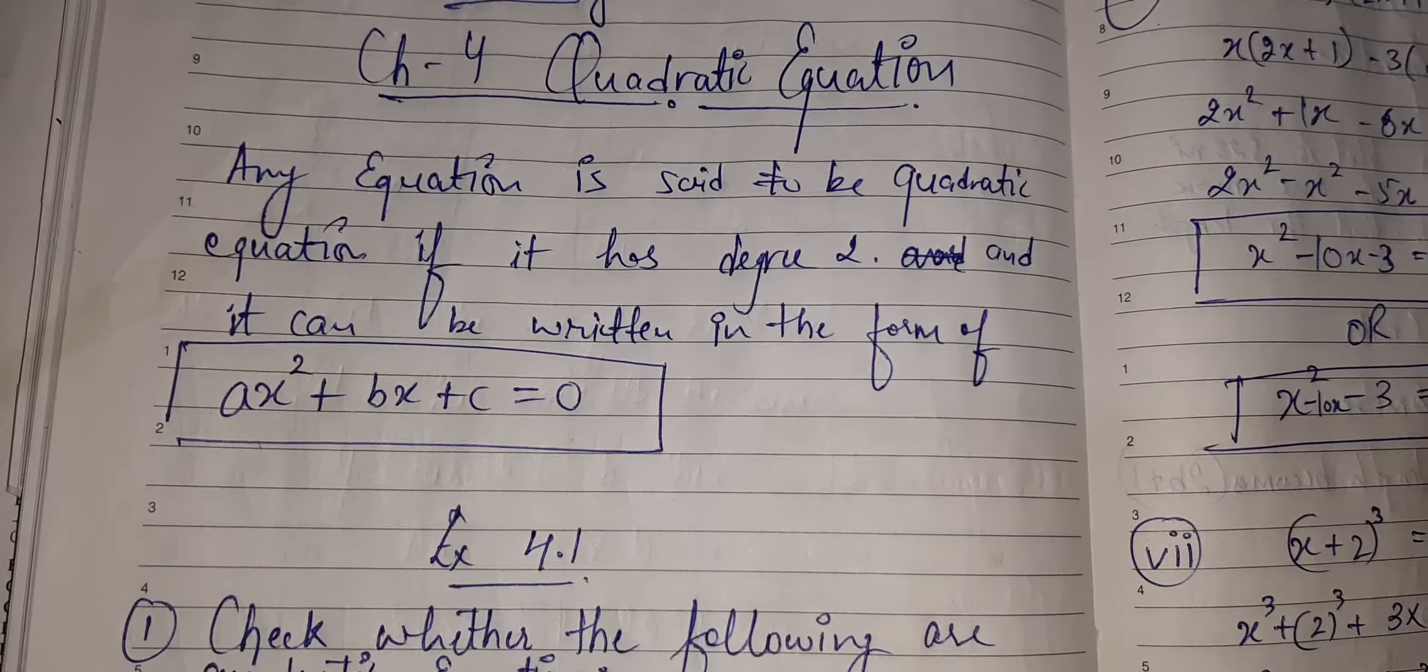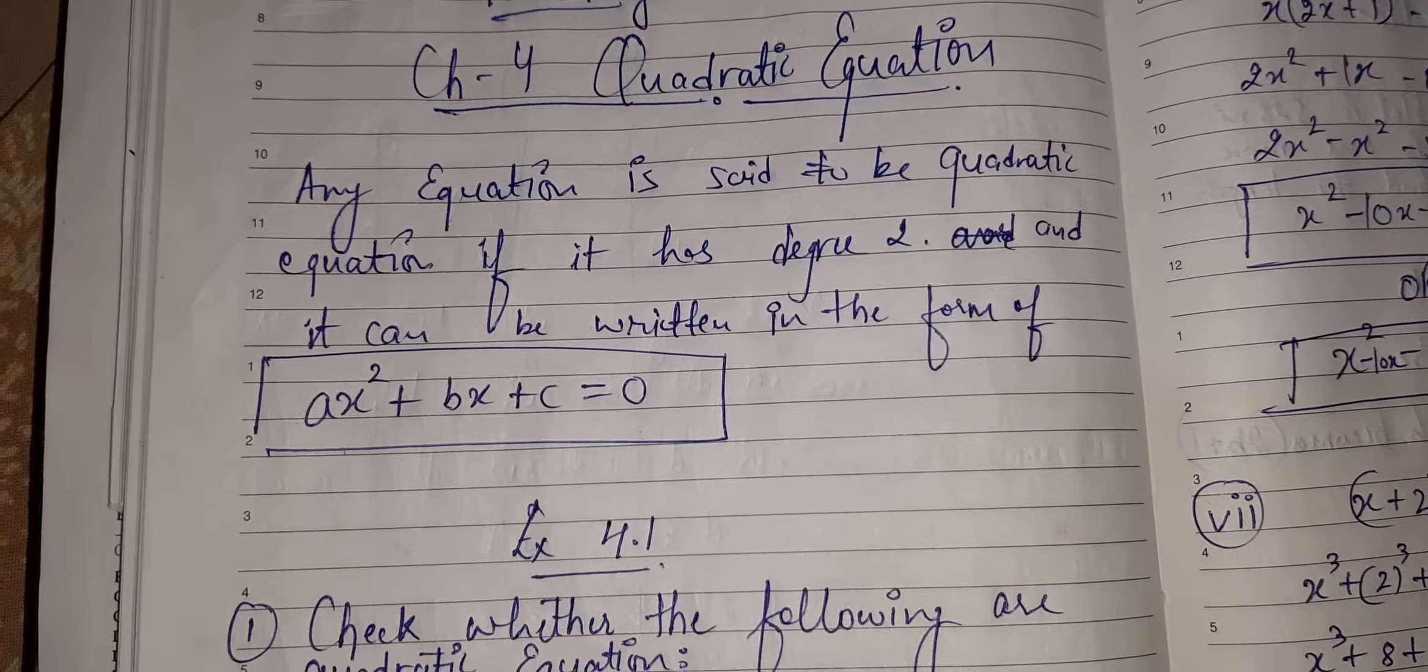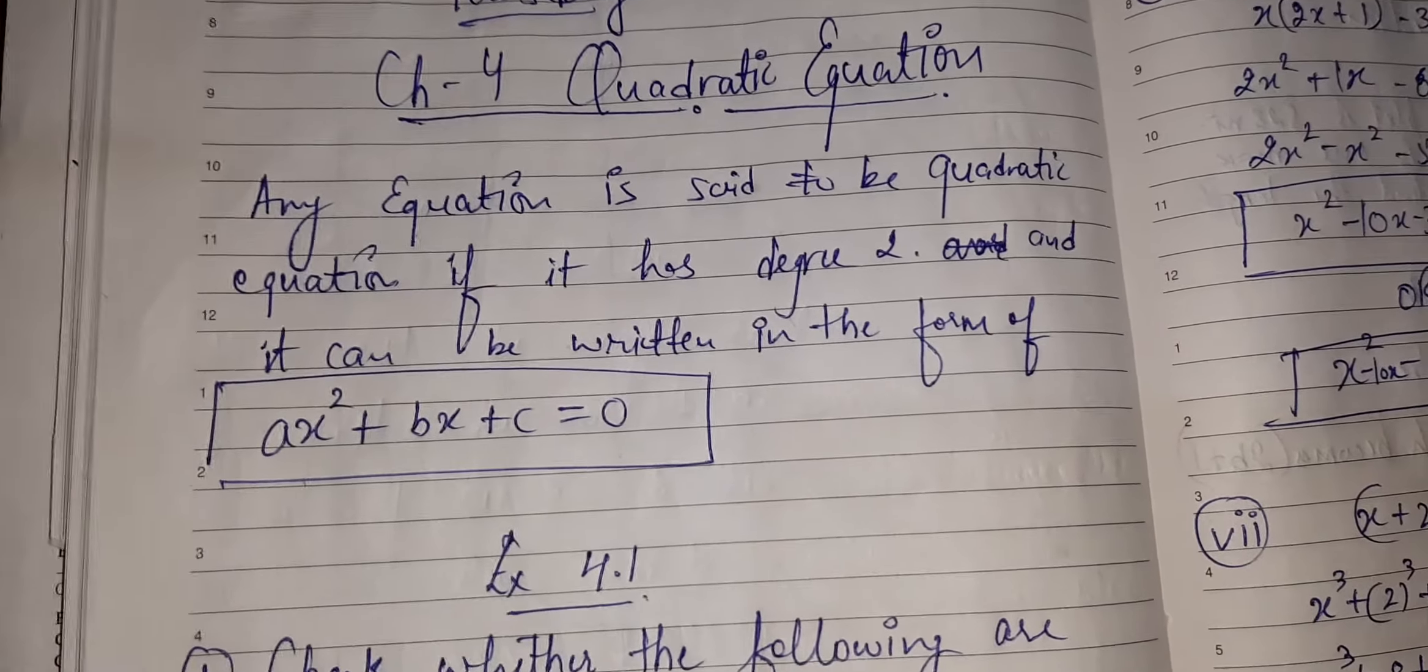Any equation is said to be quadratic equation if it has degree 2. If it is having degree 2 or it can be written in the form of AX squared plus BX plus C, then it can be quadratic equation.